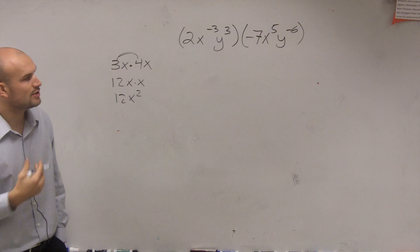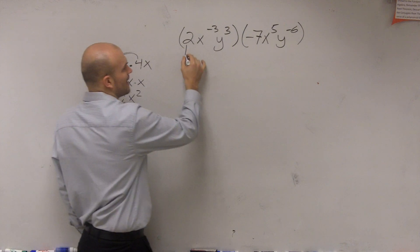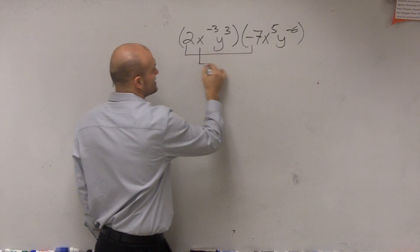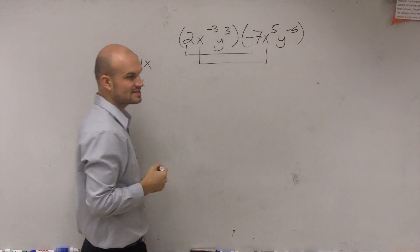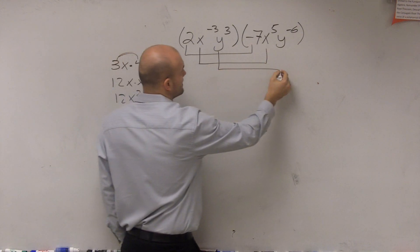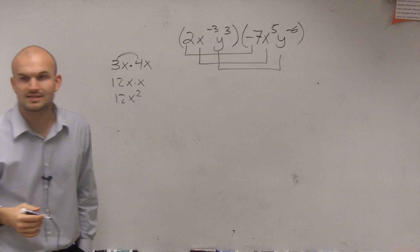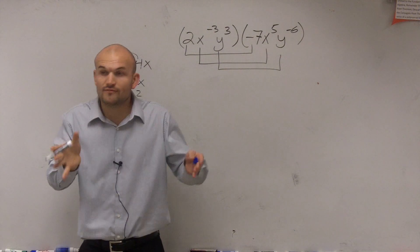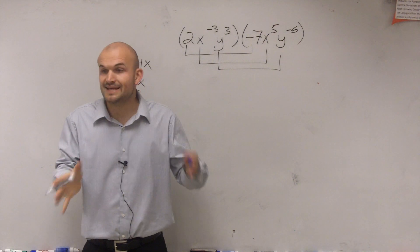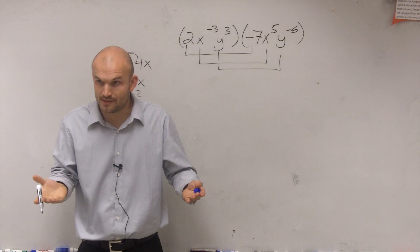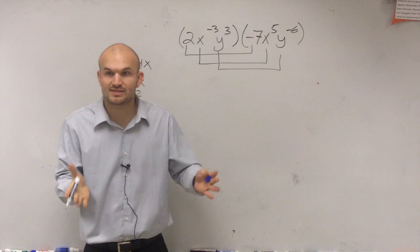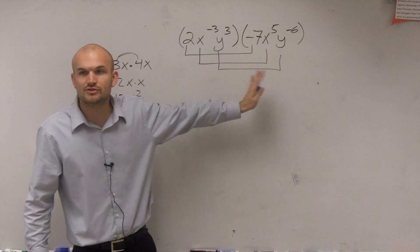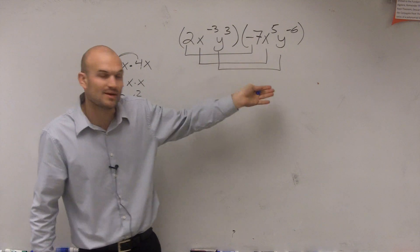So what that means is when we're doing a problem like this, I can only multiply the 2 times the negative 7, the x to the negative 3rd times x to the 5th, and the y to the 3rd times y to the negative 6. You can only multiply your like terms because, remember, all of our rules state that the base always had to be exactly the same. So when you're multiplying with exponents, you can only multiply ones that have the exact same base.